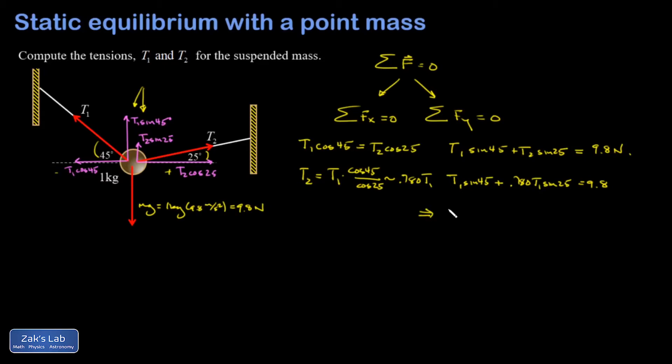I can factor the T1 out of the left hand side and combine sine 45 plus 0.780 sine 25. When I do that, I get 1.037. Then simply solve for T1 by dividing by its coefficient, and I get that T1 is equal to 9.45 newtons.